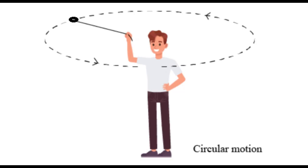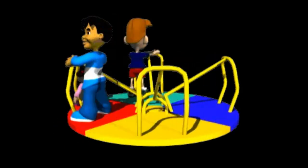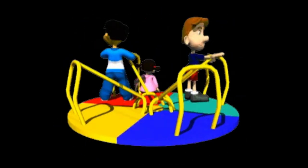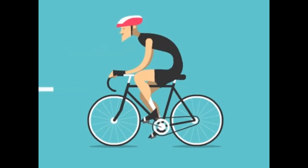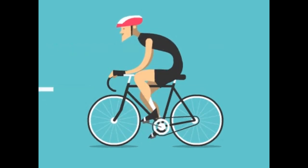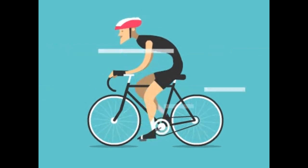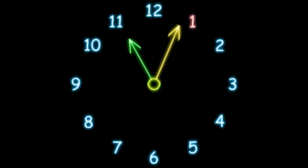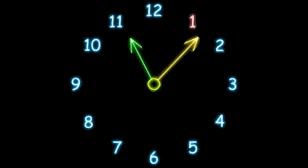Next up is circular motion. This is when something moves in a circle. Have you ever been on a merry-go-round? That's circular motion. Other examples include the wheels on your bike and the hands of a clock.